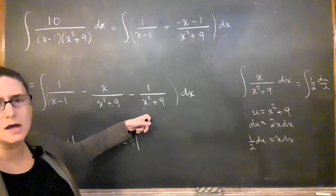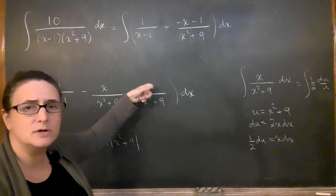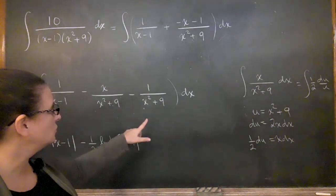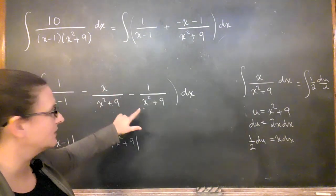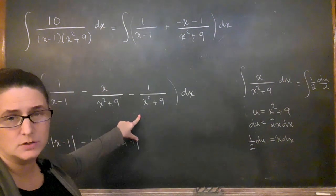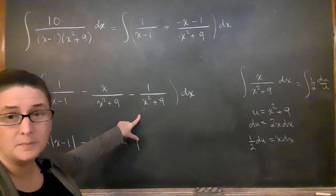However, this guy is not a natural log because I don't have the x in the top. This looks like, well, looks like inverse tan, right? Inverse tan is 1 over x squared plus 1. This has an x squared plus 9.